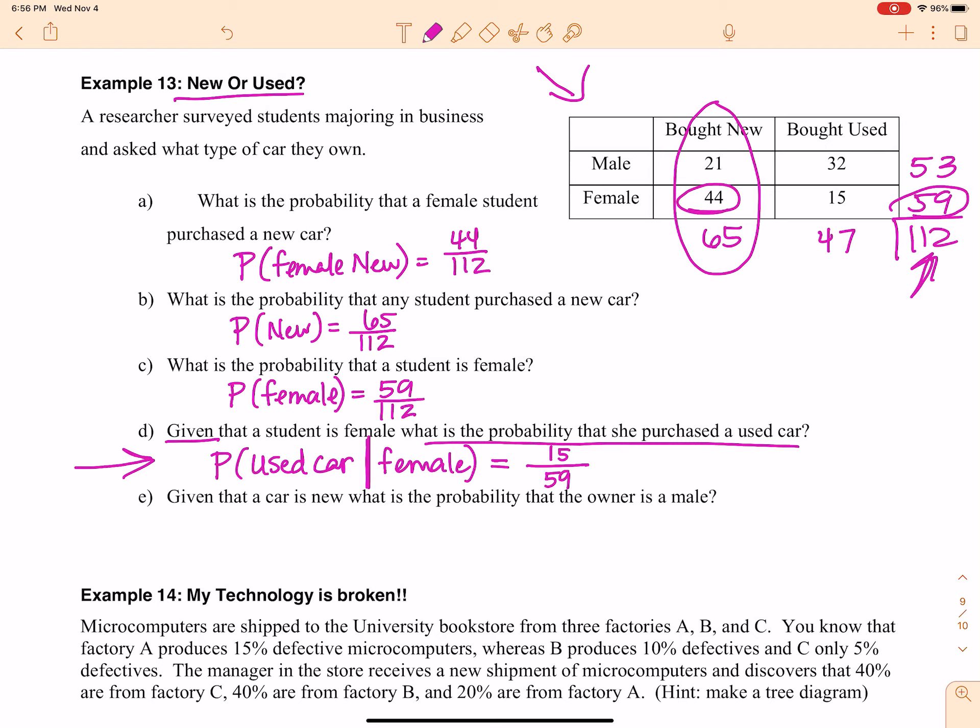All right, part E, given that a car is new, what is the probability the owner is male? So what is the probability the owner is male, that goes in the front, so the probability of being male, given the car you purchased is new. So I'm going to look at all the people who bought new, so that's 65, and out of that, the males would be 21. That's how your conditional probability works. It's beautiful.